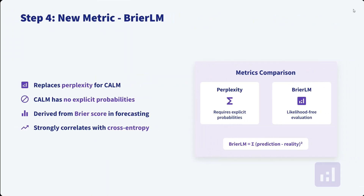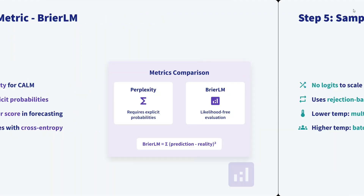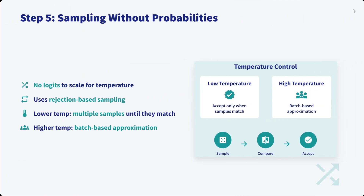They also introduce a new metric called BEER-LM. For evaluating language model performance you typically use perplexity, but perplexity works on probabilities. Since in CALM there are no probabilities — we are predicting vectors — they came up with a new metric called BEER-LM, derived from the Brier score in forecasting and strongly correlated with cross-entropy. You can check the details in the paper.